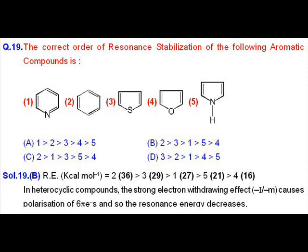Question number 19. It is about resonance energy and resonance stabilization of the given compounds. So here the most stable compound is benzene having the highest value of resonance energy, 36 kilocalorie per mole.